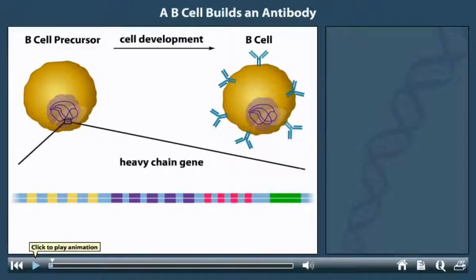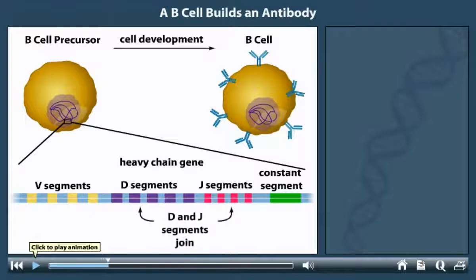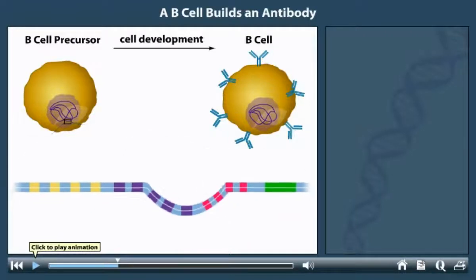A heavy chain gene consists of several families of coding regions called V, D, J, and constant segments. In a B cell, only one segment from each family becomes part of a mature heavy chain gene. The gene is rearranged by the random selection and joining of one segment from each family. Intervening DNA is discarded.